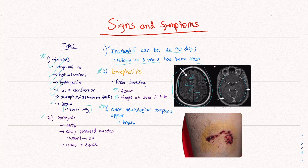The second type is paralytic rabies, which accounts for 20% of cases. As you can assume, it involves paralysis. What's terrible about this is that you are slowly paralyzed from the site of the wound and the muscles around it, all the way to the rest of your body. This results in eventual coma and death. Overall, you don't want to catch rabies because it's a pretty terrible way to die.